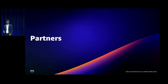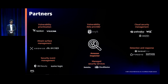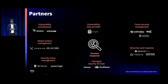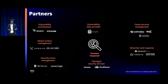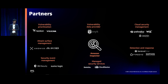Before I start with the demo, I just want to call out our partners where we have built integrations already. For vulnerability prioritization, we've integrated with Resilient and Vulcan. For attack surface management, Axonius and XM Cyber. For SIEM solutions, IBM Security and Sumo Logic. Snyk was one of our most important vulnerability data providers. We also have partners like Palo Alto, Wiz, Cavirin, and for detection and response, FireEye, Sophos, and SentinelOne.